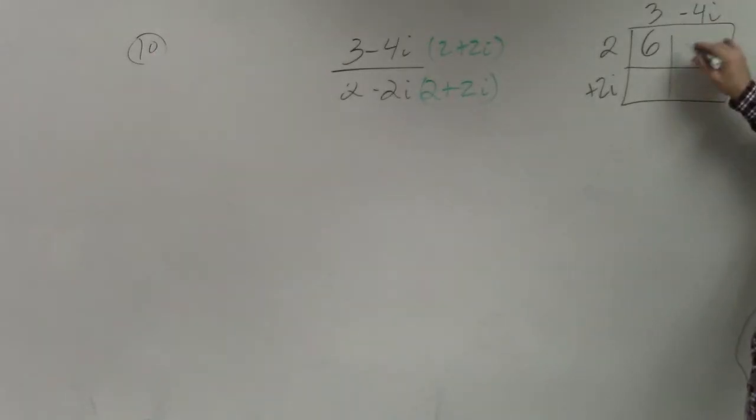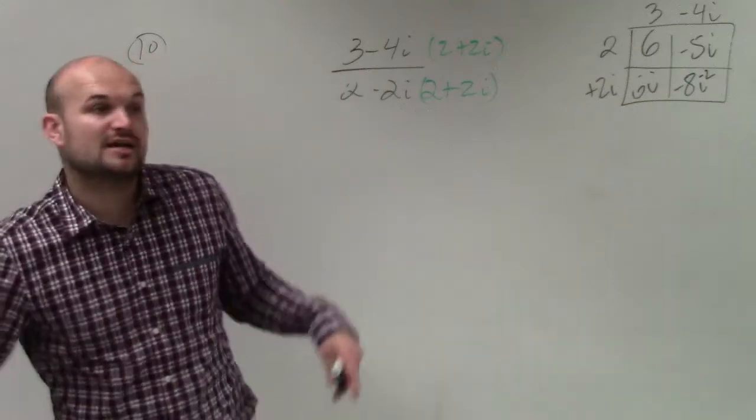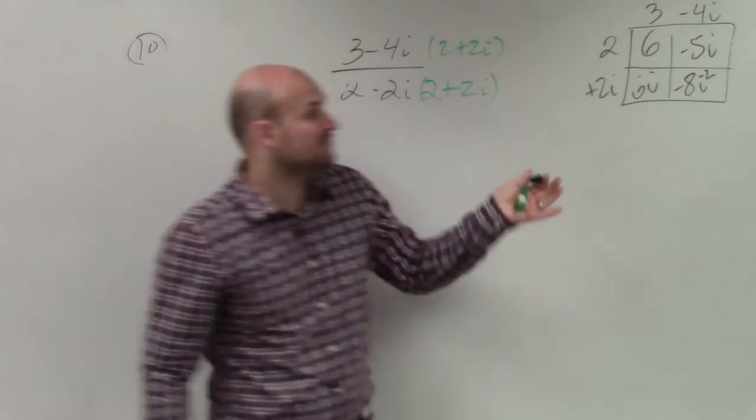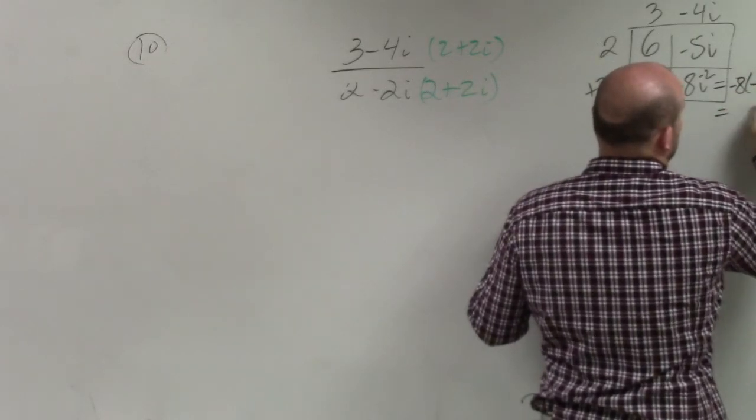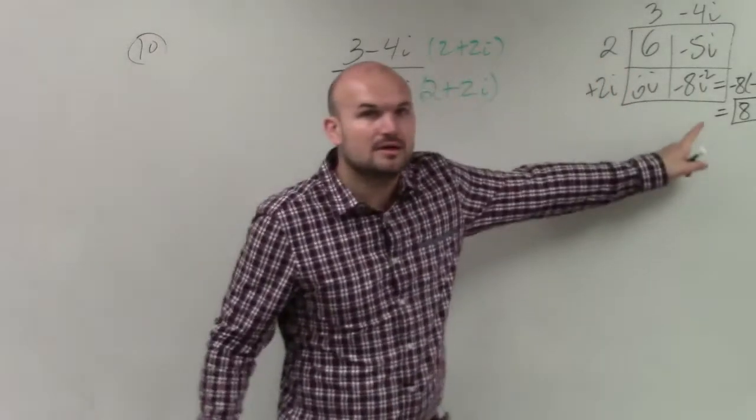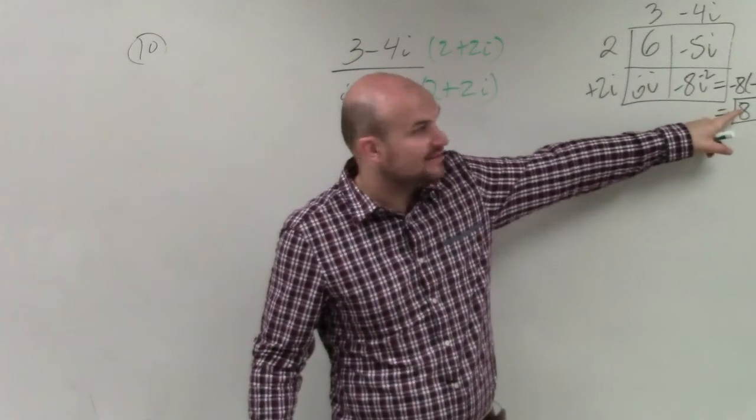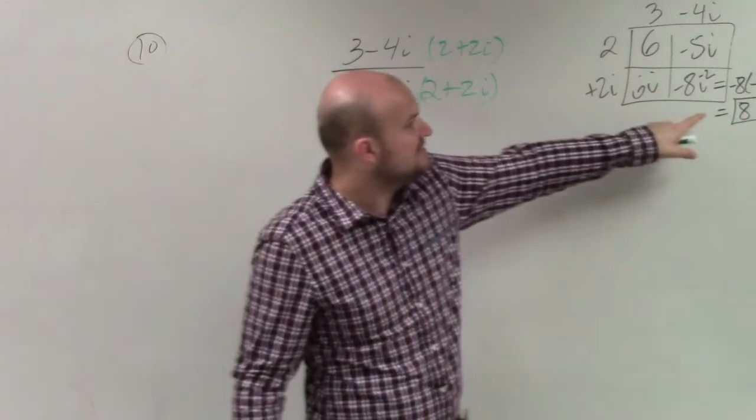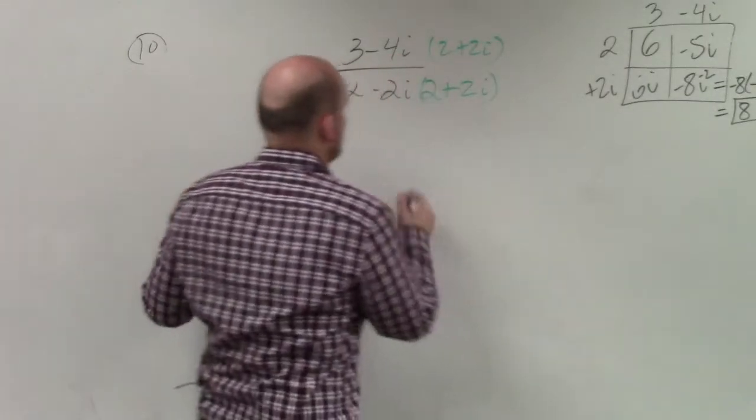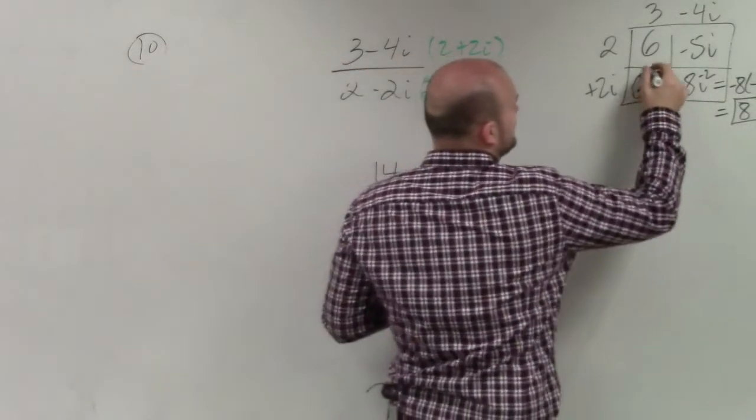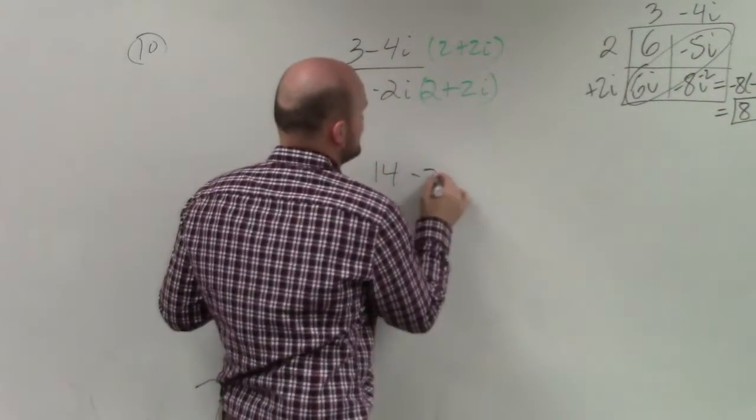So 2 times 3 is 6. 2 times negative 4i is negative 8i. 3 times 2i is 6i. And 2i times negative 4i is negative 8i squared. Now, do you guys remember what i squared was? Negative 1. So really, that's negative 8 times negative 1, which is really 8. Okay? So we want to make sure that we have that 8 in there. And what's important about that is you look at 8 plus 6. These are like terms, right? Those are both numbers. So really, that becomes 14. And then we have 6i minus 8i is minus 2i.